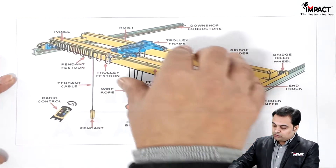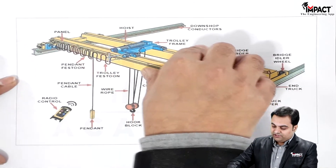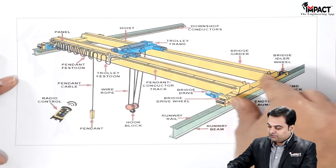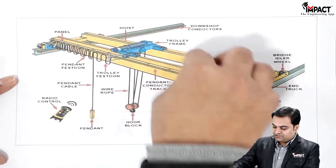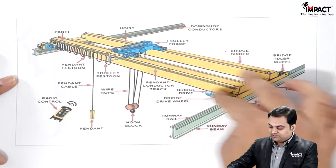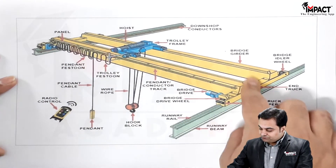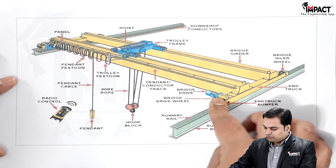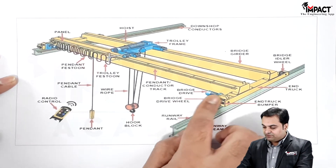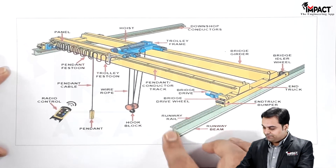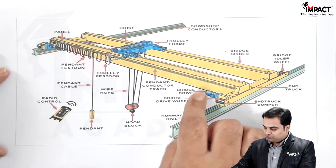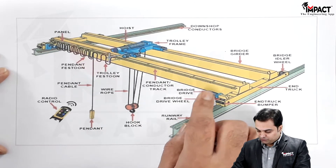The trolley frame travels on the girders. These elements are called girders, and in order to drive the girders, a motor arrangement is also provided.